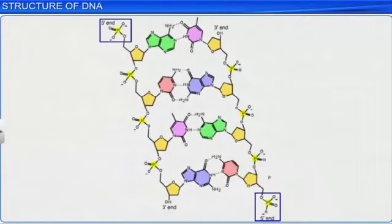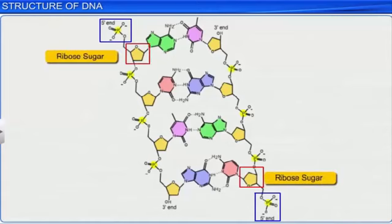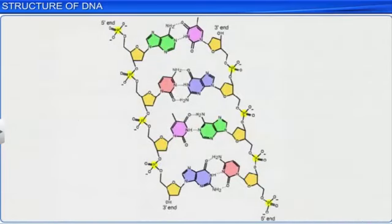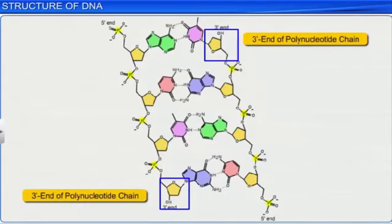At one end of this chain is a free phosphate moiety at the 5' end of ribose sugar, which is called the 5' end of the polynucleotide chain. Similarly, at the other end of the chain is present a ribose with a free 3' OH group, which is called the 3' end of the polynucleotide chain.